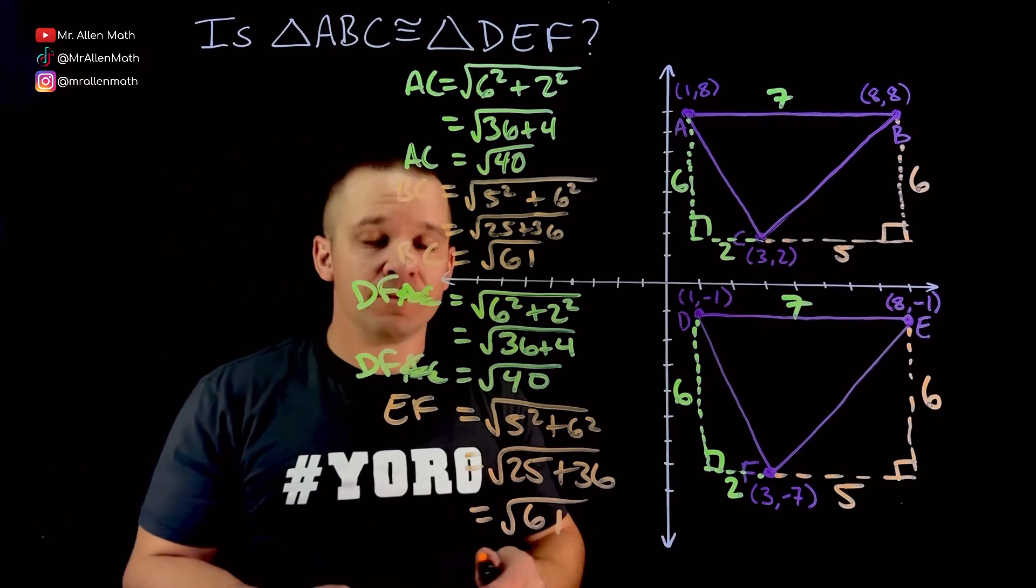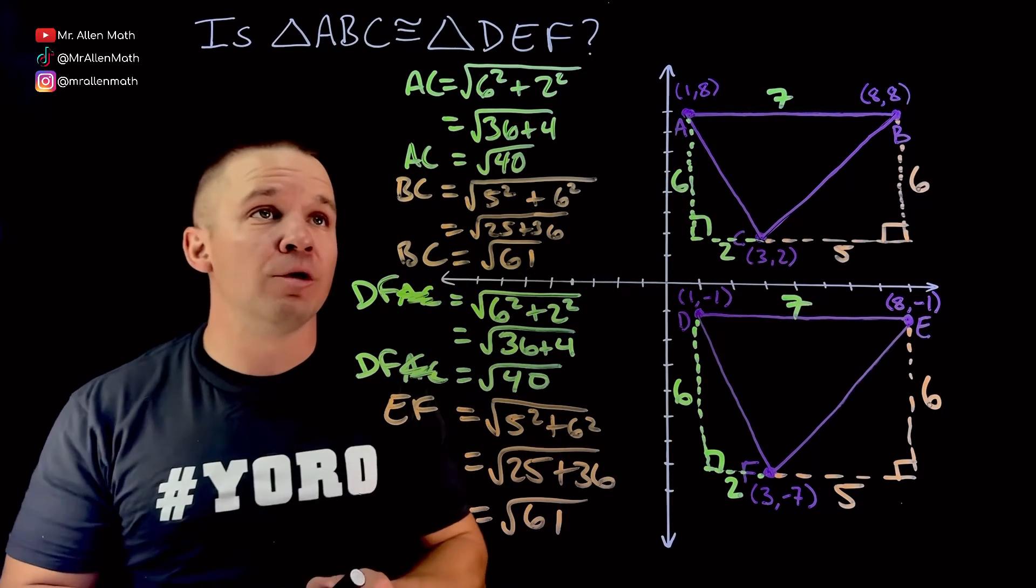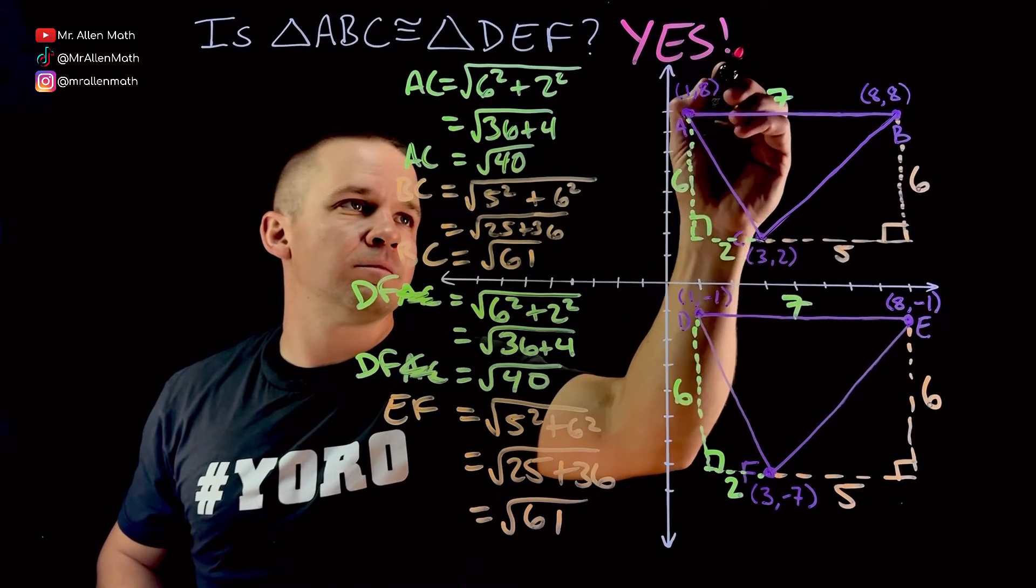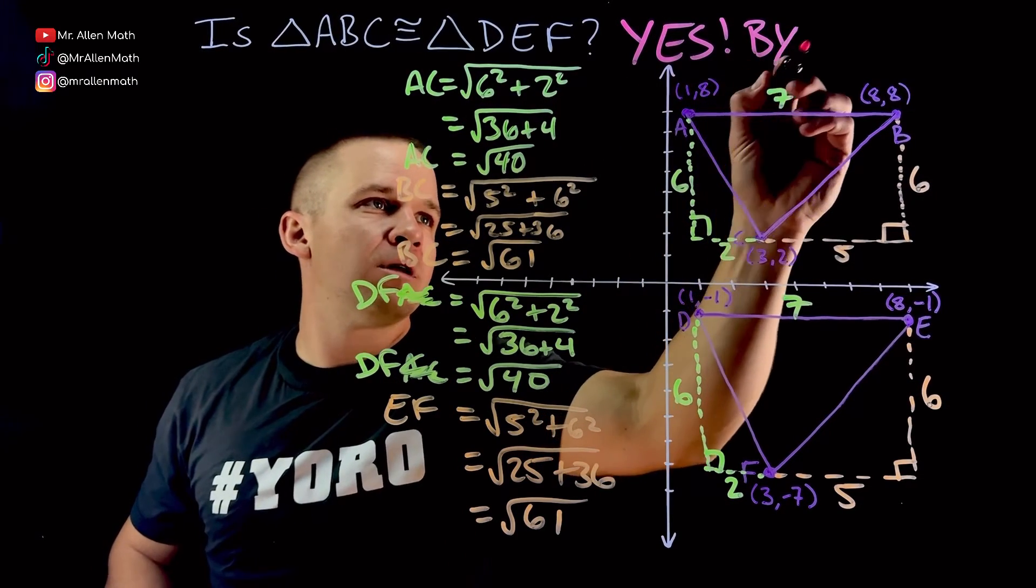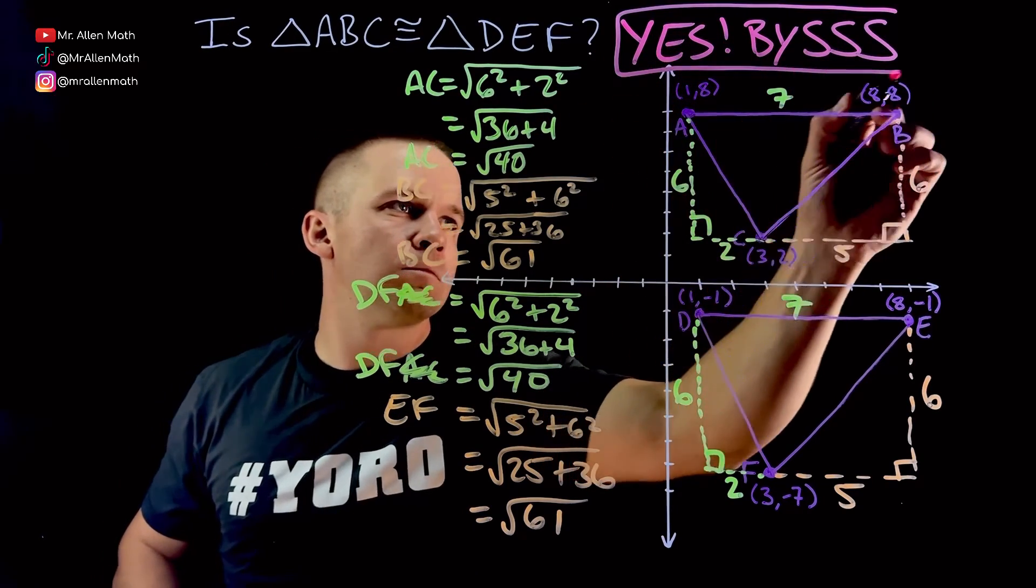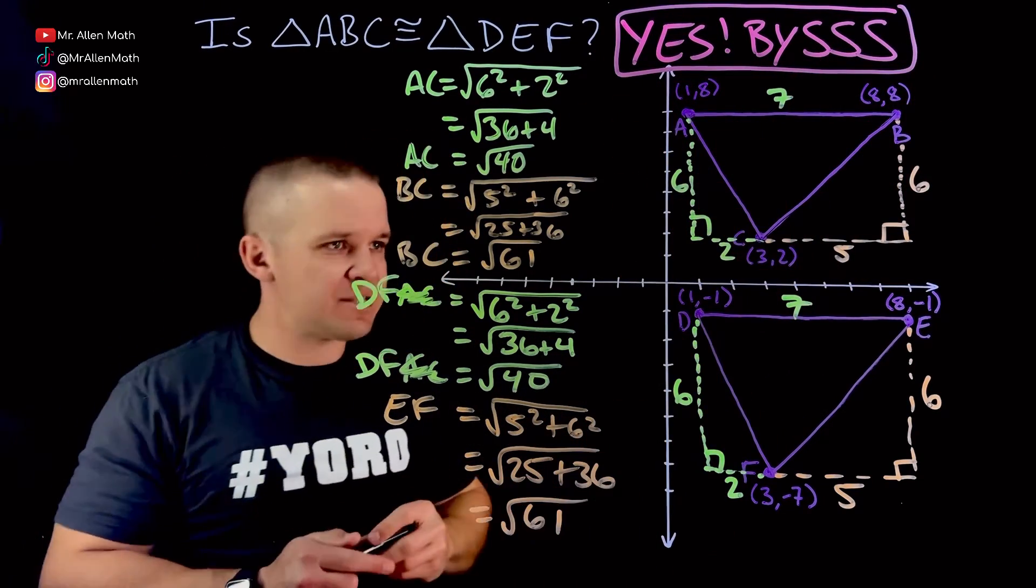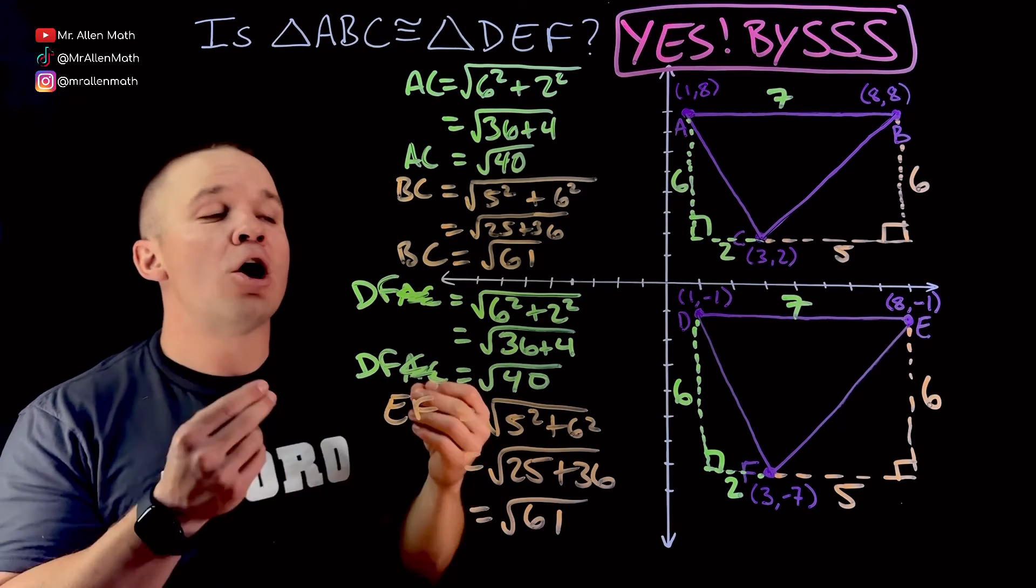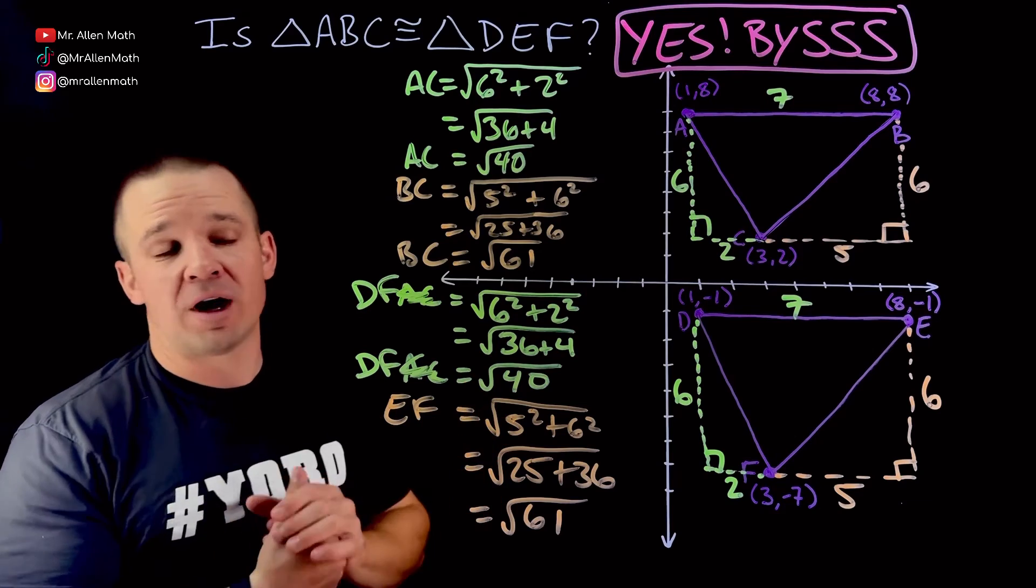So now we have that they are congruent. Yes! By side, side, side. There we go. Yes, they are congruent by side, side, side. All of my corresponding sides are congruent, therefore they're congruent triangles.